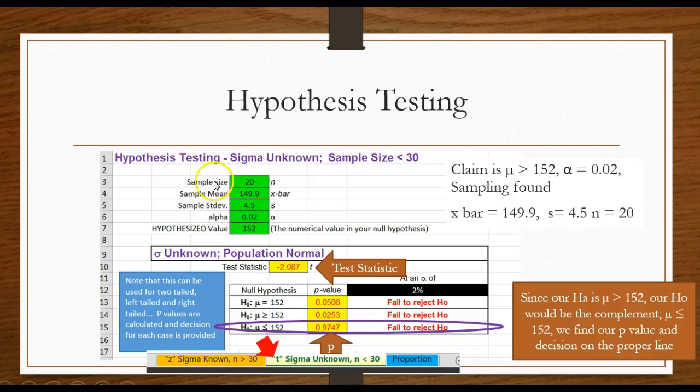Alright, so on this one I would use the hypothesis testing. I would push the tab down here that says t where my sigma is unknown and the sample size is less than 30. I put in the information, paying attention to where I'm putting it in. It gives me the test statistic, it gives me the p-value, but since my alternative hypothesis is that it's greater than 152, my null would be that it is less than or equal to, so I look at the correct line. All of these can be different. This is set up so that it would handle three different type tests.